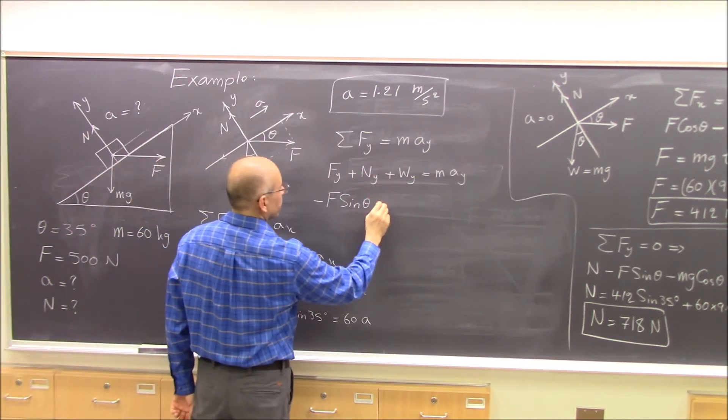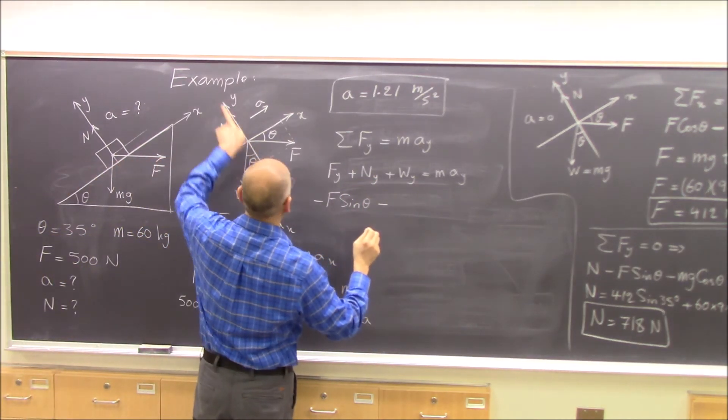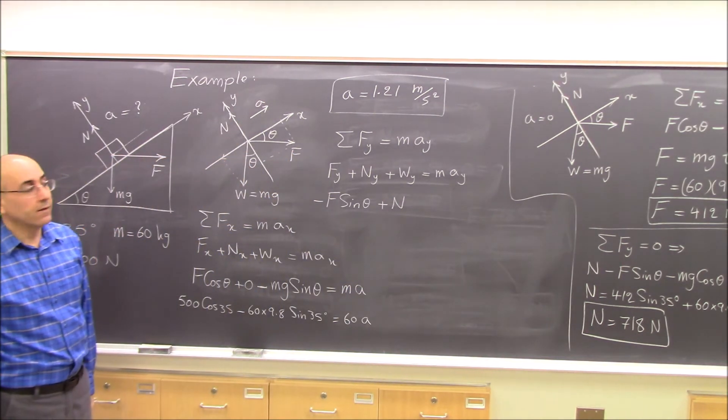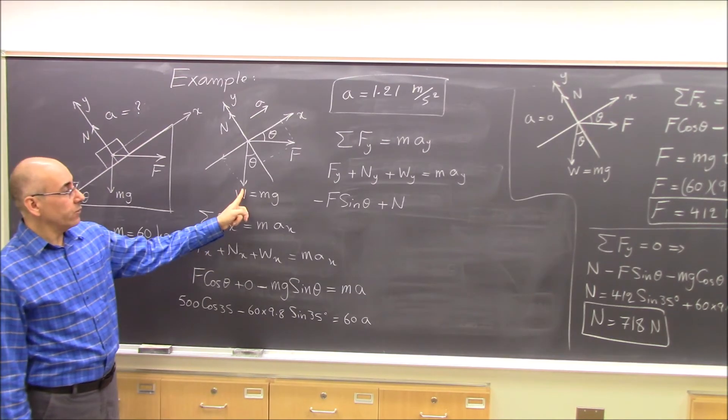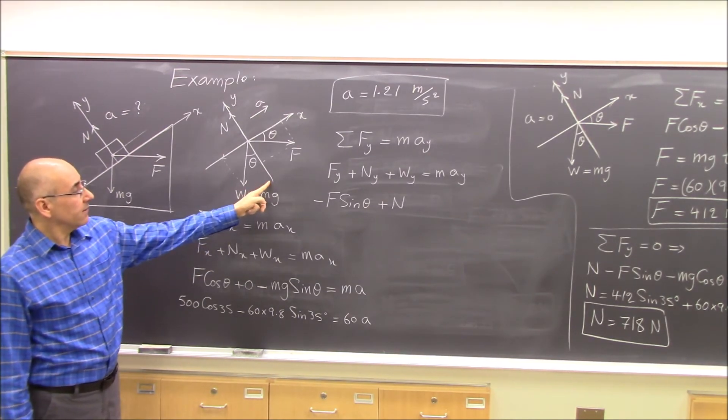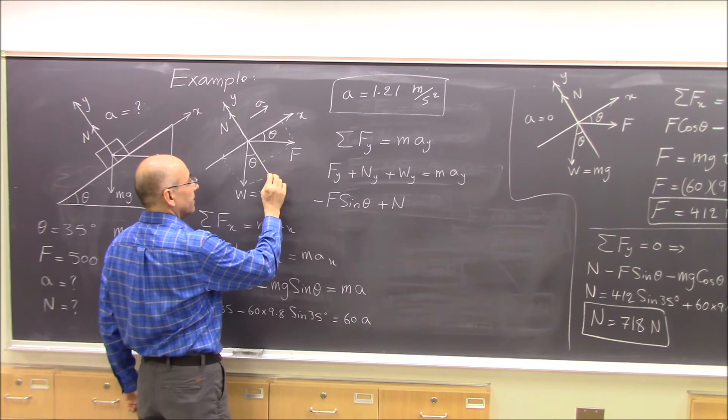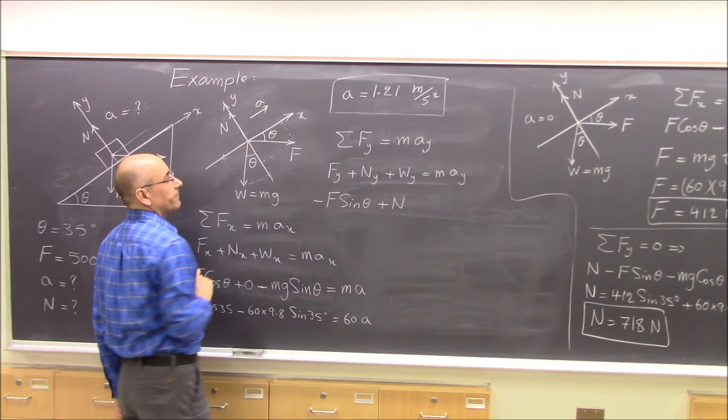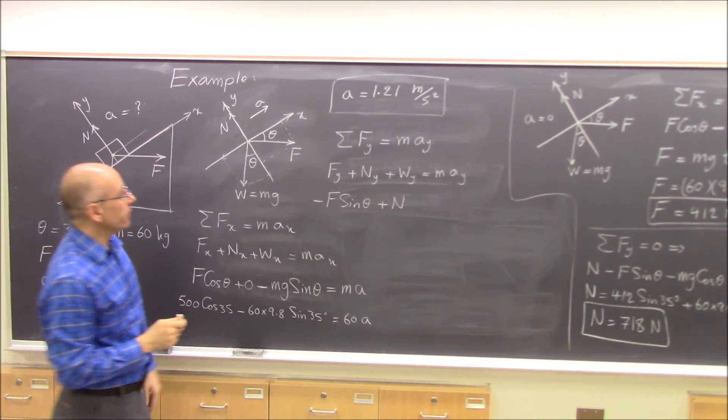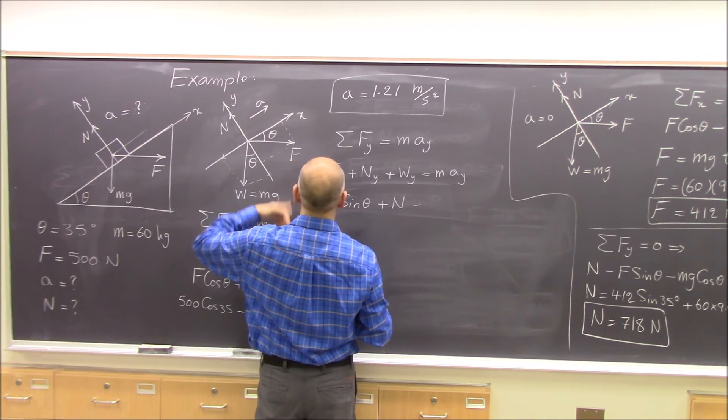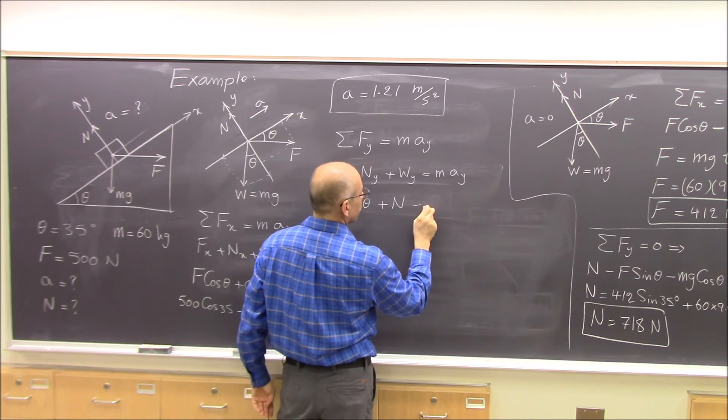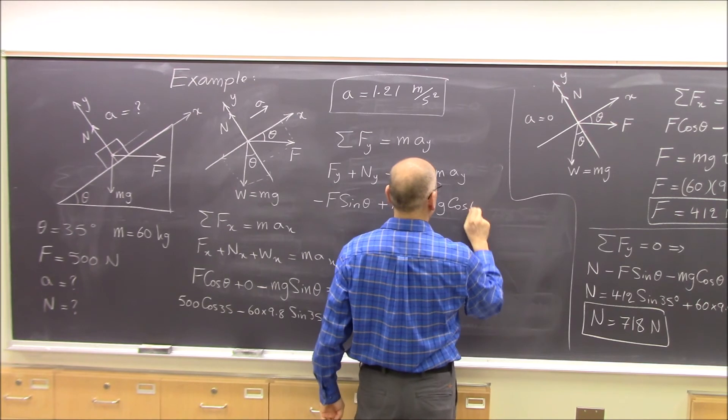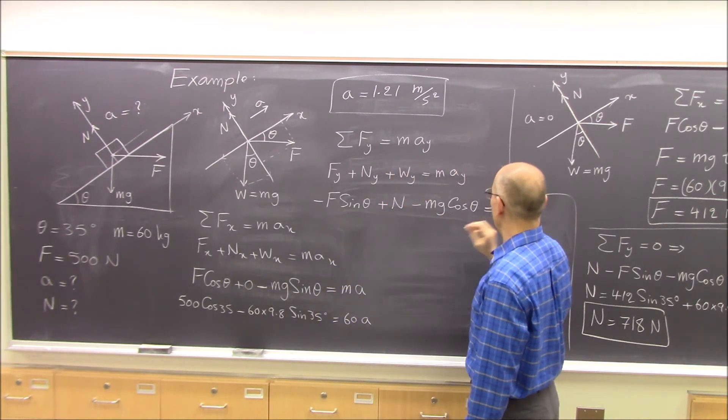And Ny is equal to, because N is in the y-direction, the magnitude of N. And Wy is this way, adjacent to theta. The y-component is adjacent to theta, so I use cosine. And it is in the negative direction of the y-axis, so it will be negative mg cosine theta equals m times ay.